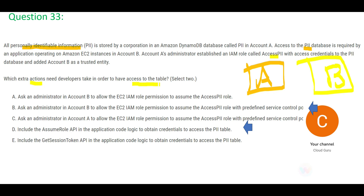Option A says: in Box B there is an EC2 instance — give that instance whatever access is granted by the IAM role. But giving that person the full ID card means they can get in and rob the gold — they have full access and can mess around the entire Box A. That is bloody dangerous; this approach grants excessive permissions.